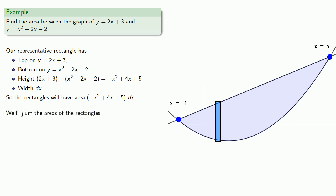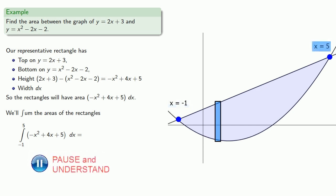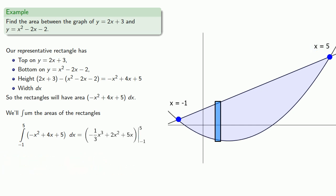We sum the areas of those rectangles. The time-travel gag repeats to confirm the differential variable is dx. We sum the areas of the rectangles from x equals negative 1 up to x equals 5, then anti-differentiate and evaluate.